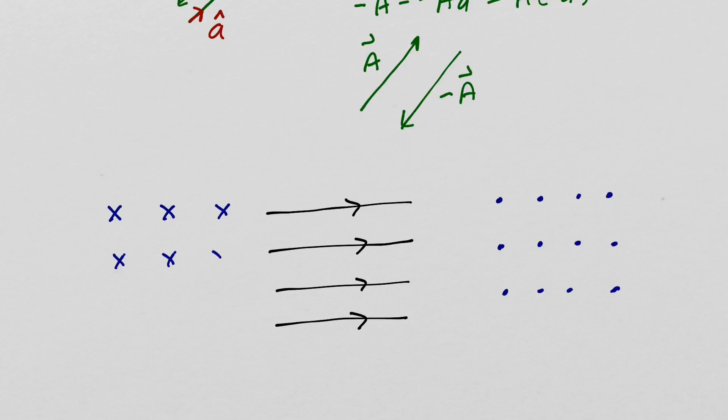To remember this, think of an arrow. If the arrows are coming at you, you see the points signifying the vector field is coming at you. If the arrow is going away from you, you see the tail feathers. So the X's represent the vector field going into the page.